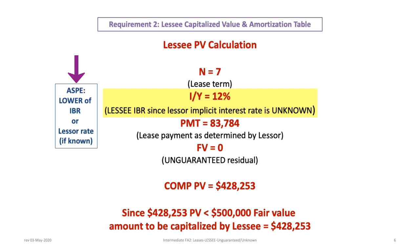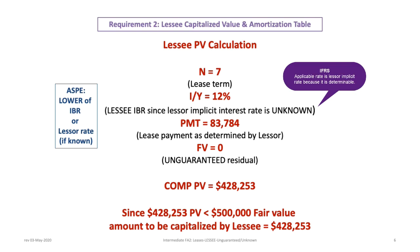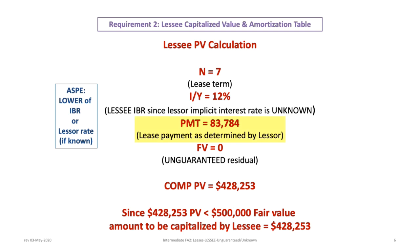Since the lessor's rate is not known in this scenario, we must use the 12% lessee IBR. This scenario is applicable only to ASPE because under IFRS 16, the lessee uses the lessor's implicit rate as long as it is determinable — and even a basic financial calculator can determine the implicit rate, so it is always considered determinable under IFRS. The lessee then enters the $83,784 payment as PMT, sets FV to zero because the residual is unguaranteed, and computes PV to get $428,253.